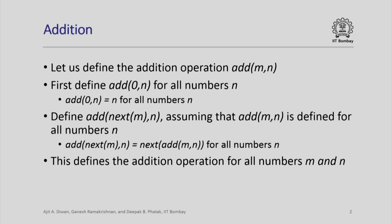Informally, we know that next m is m plus 1. So adding m plus 1 to n is like adding m to n and then adding 1 to that. That is what this is saying: to add m plus 1 to n, we add m to n and add 1. But the formal specification is: add of next m, n is next of add of m, n for any number m.